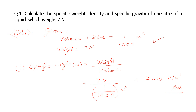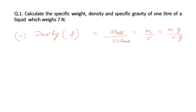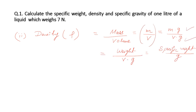Now let's move to the second part — the density. Density is defined as the ratio of mass to volume. There is a relation between density, specific weight, and acceleration due to gravity. We write density as mass over volume, then multiply acceleration due to gravity on top and bottom, so we get weight divided by volume, multiplied by acceleration due to gravity. Since weight by volume is specific weight, density equals specific weight divided by acceleration due to gravity.